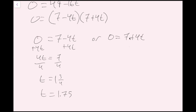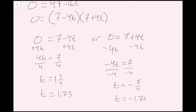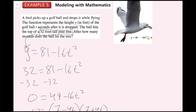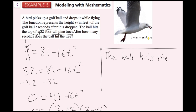Solving the second factor: 0 equals 7 plus 4t gives t equals negative 7 fourths, or negative 1.75. I'm going to reject this solution because negative time doesn't make sense in this context. So my only solution is t equals 1 and 3 fourths, or 1.75. Going back to the question — after how many seconds does the ball hit the tree? The ball hits the tree after 1.75 seconds.